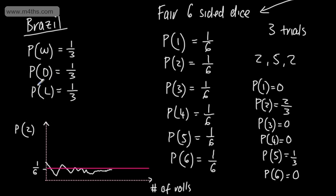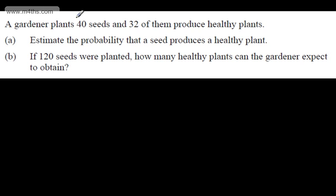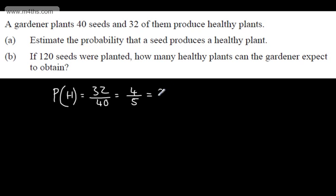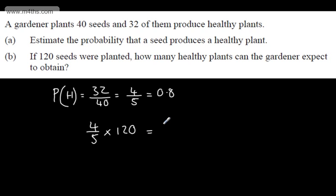So this is a slightly different way of looking at probability, but often far better than just saying the probability of winning is a third, drawing is a third, and losing is a third, when those are generally not equally likely outcomes. Let's look at a question: a gardener plants 40 seeds and 32 of them produce healthy plants. In part A, we're asked to estimate the probability that a seed produces a healthy plant. The probability of a healthy plant is 32 out of 40, which simplifies to 4 fifths, or 0.8.